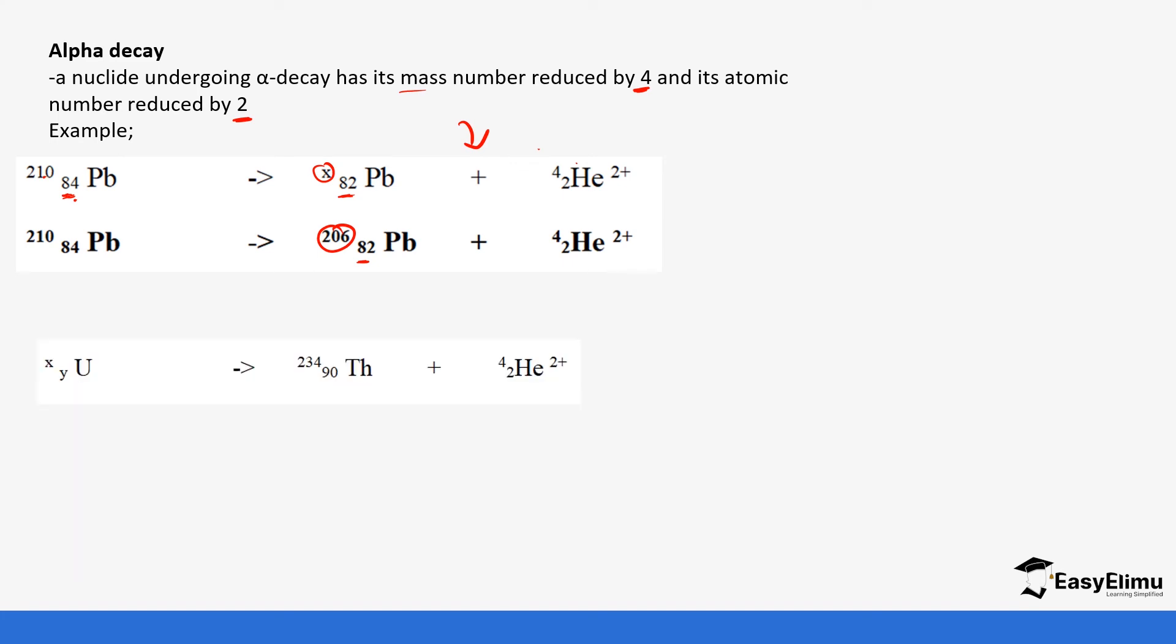Let's look at another example. You have the product or the daughter nuclides and the emission which is the alpha, so we have to look for the mass number and the atomic number of the parent nuclide. We're supposed to add - the total in the product is supposed to be the reactant, so it is 234 plus 4 to give us 238 and 90 plus 2 gives us 92. So it becomes 238 and 92.